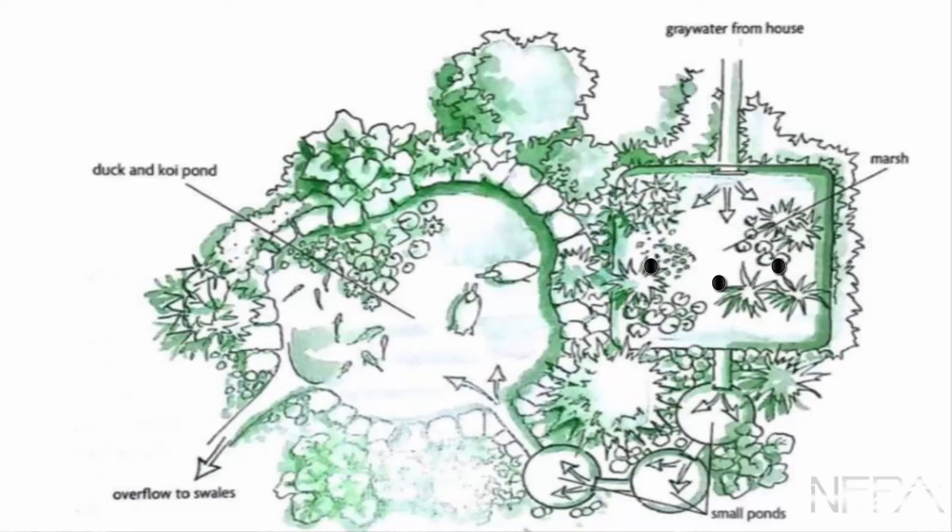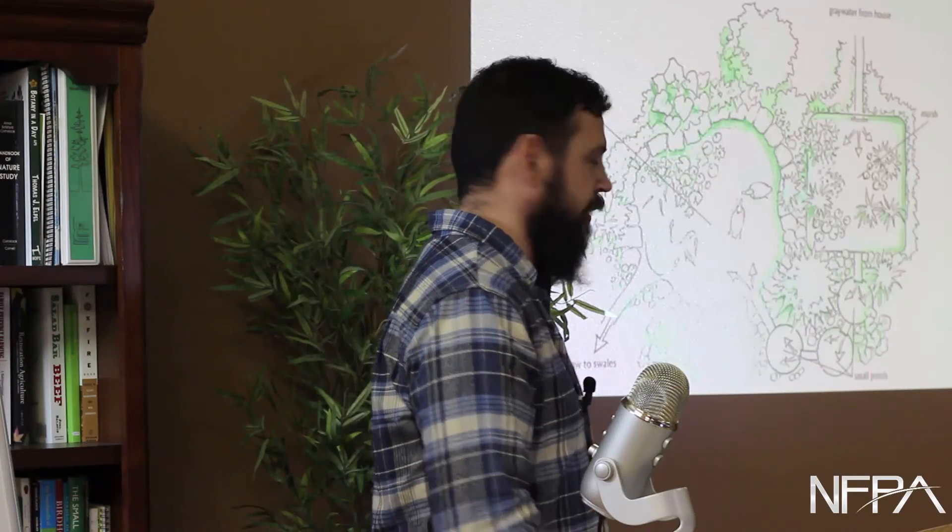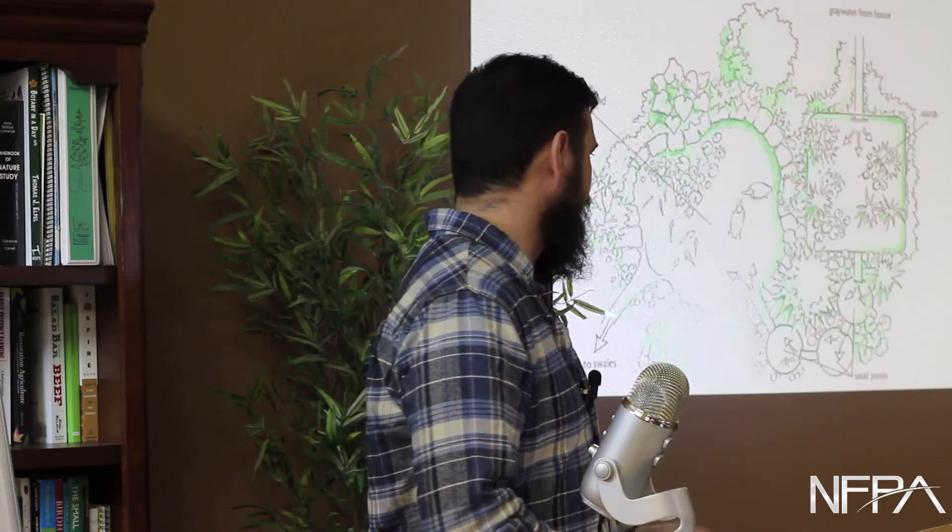And then from there it flows down in here. So reeds, cattail, all kinds of water loving plants in here. And it goes into a series of small ponds. So this small pond with lots of aquatic plants and everything else growing around it. And that overflows into another small pond, which overflows into another small pond, which overflows into a bigger pond. And they're growing ducks and koi and aquatic plants in there.